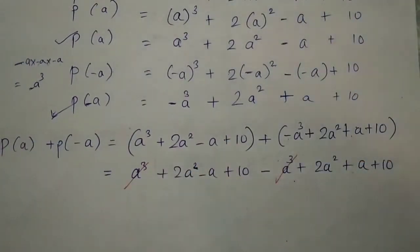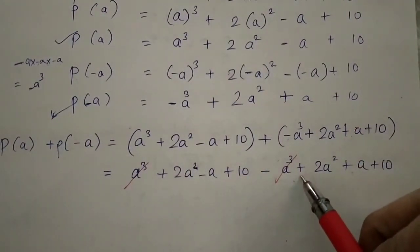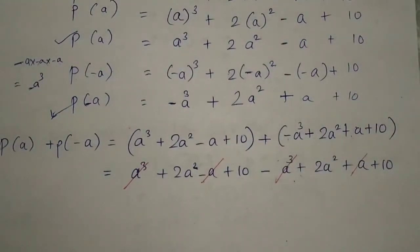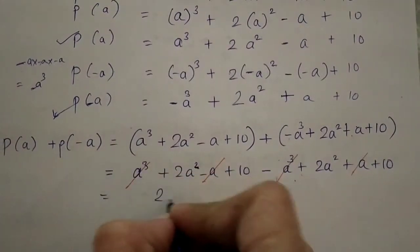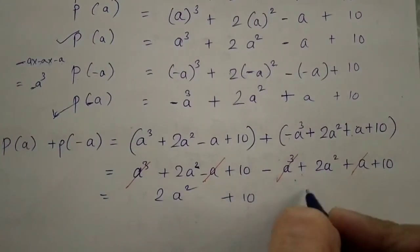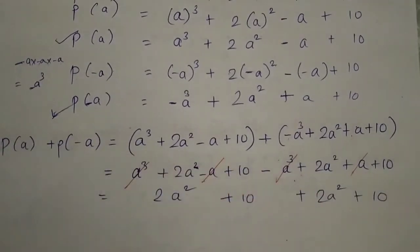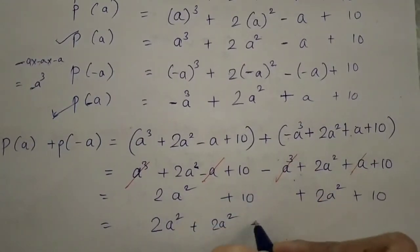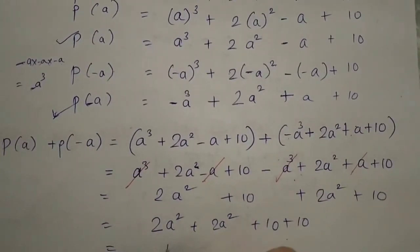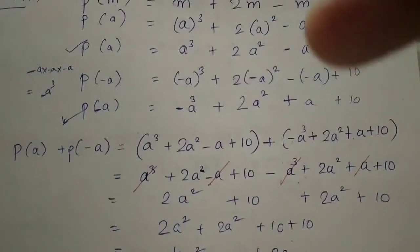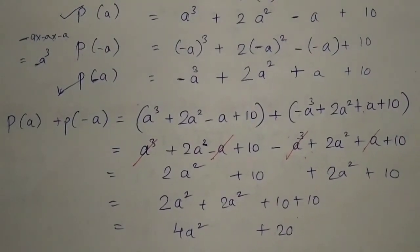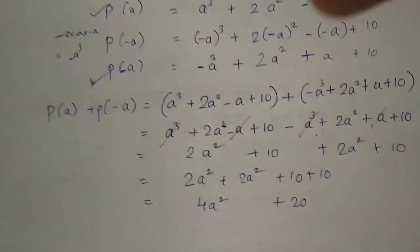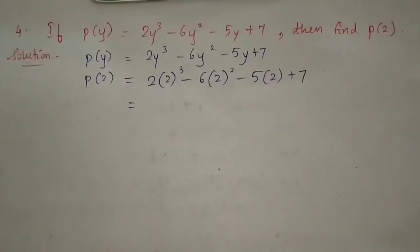After cancellation: 2a² plus 2a² remain (same signs, so they add), −a and +a cancel to zero, and 10 plus 10 remains. Bringing like terms together: 2a² plus 2a² equals 4a², and 10 plus 10 equals 20. Therefore, p(a) plus p(−a) equals 4a² plus 20.